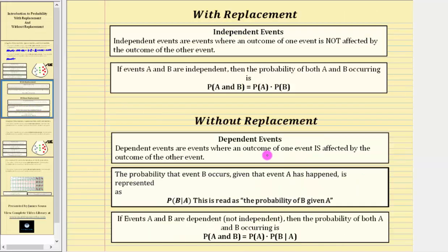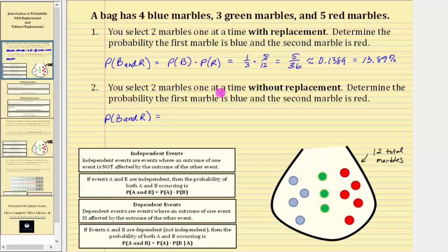Dependent events are events where an outcome of one event is affected by the outcome of the other. The probability that event B occurs, given that event A has happened, is represented using conditional probability notation. So if events A and B are dependent, then the probability of both A and B occurring is equal to the probability of A times the probability of B given A has occurred. Because the marbles are selected without replacement, the probability of B and R is equal to the probability of B times the probability of R given B has occurred. We know from number one the probability of selecting a blue marble is four-twelfths or one-third.